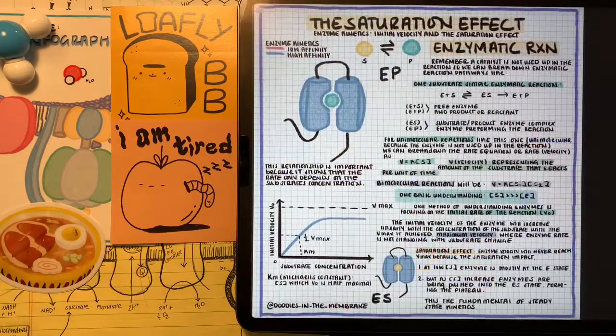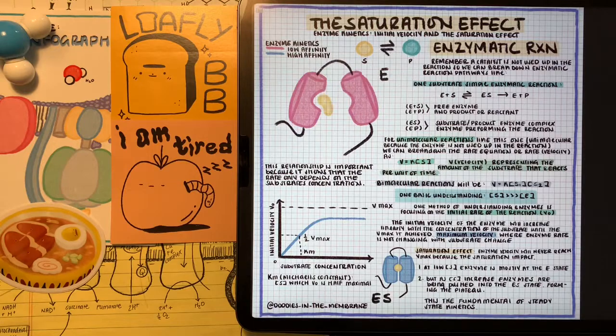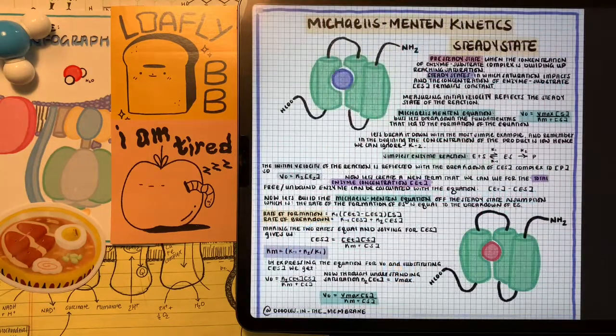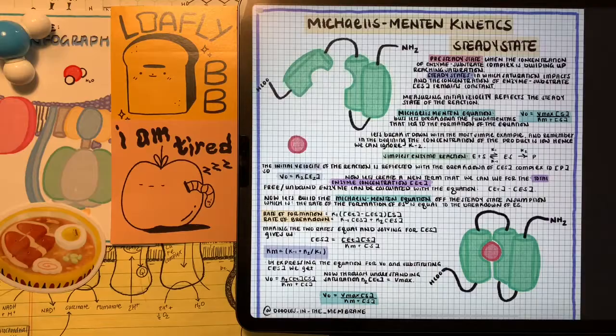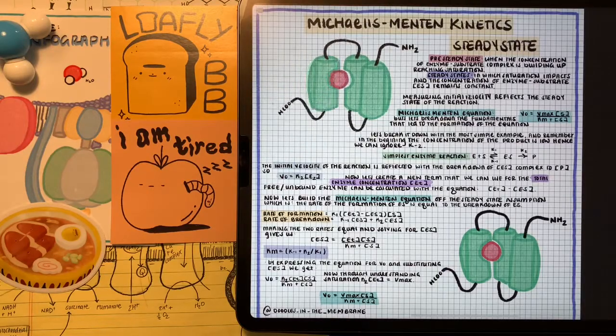When we understand the concepts and fundamentals of equilibrium, we can apply this to when we talk about enzymes and proteins and how they interact with their ligands and the reverse reactions between the ligands, substrates, and active sites.